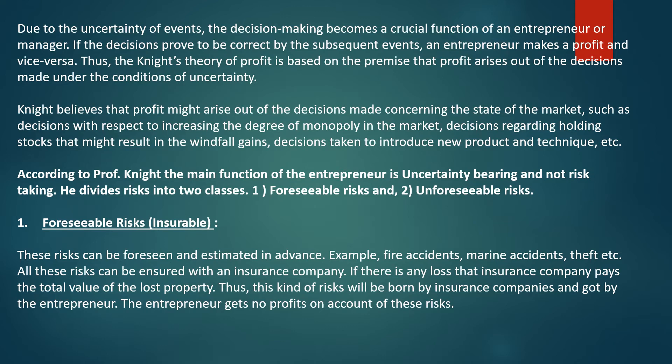Knight divides risk into two classes: forcible risk and unforeseeable risk. Forcible risk is insurable risk — it can be foreseen and estimated in advance. Examples include fire accidents, marine accidents, and theft. All these risks can be insured with an insurance company, which pays the total value of lost property in case of a loss. Thus, this kind of risk is borne by the insurance company and not by the entrepreneur, so the entrepreneur gets no profit on account of this risk.